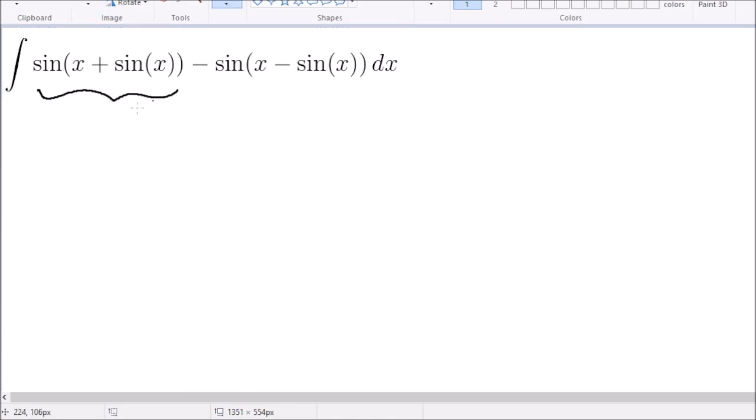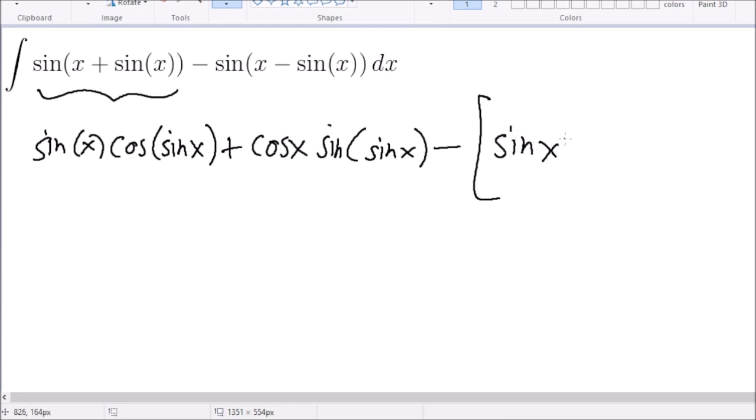So, this becomes sine of x, cosine of sine of x. Let's do it like that. Plus, cosine of x, sine of sine of x. And then minus, we have a minus sine of x, cosine of sine of sine of x. Cool. And so now this simplifies to, well, we can see, oh, okay, so this cancels out. And then these two, okay. So then we have two cosine of x, sine of sine of x.